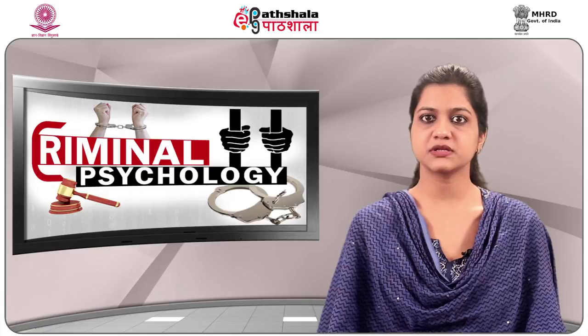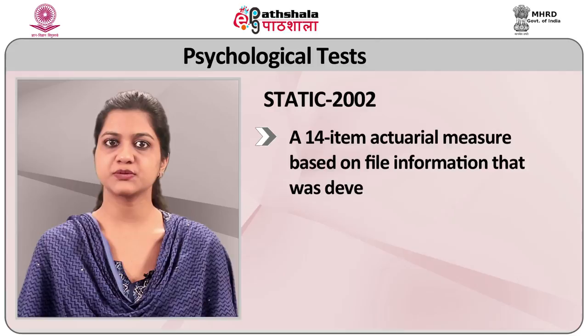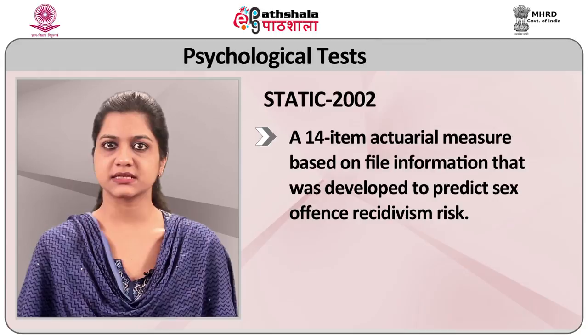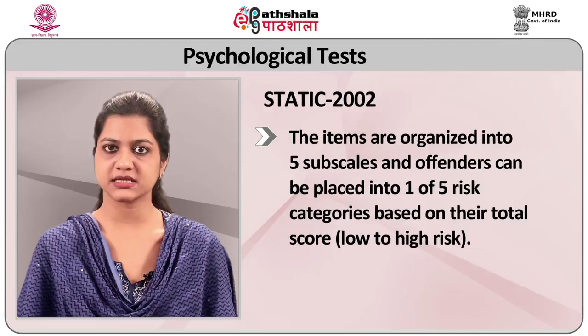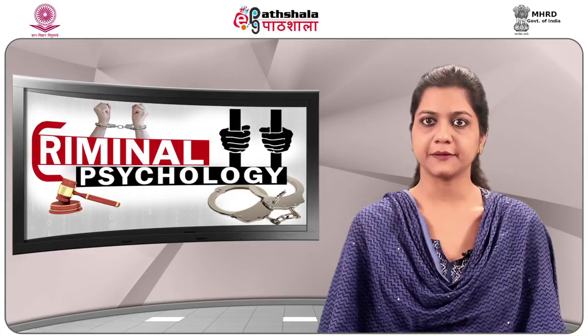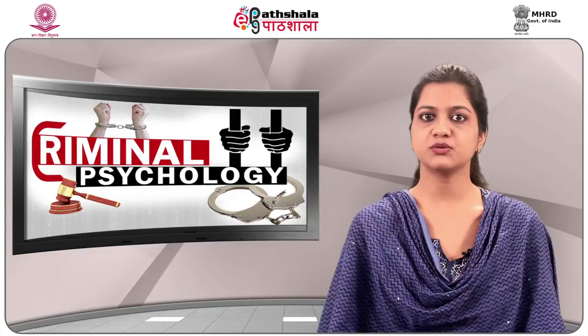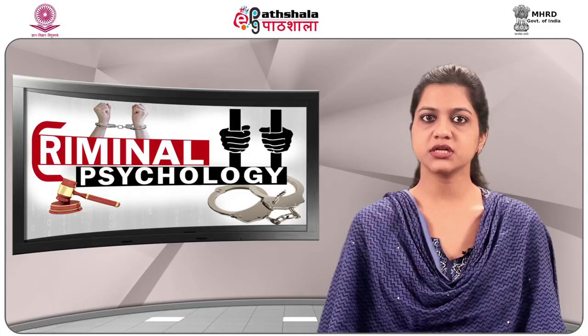STATIC-2002 is a 14-item measure based on file information that was developed to predict sex offence and rape risk. The items are organized into 5 sub-scales and offenders can be placed into 1 to 5 risk categories based on their total score (low to high risk). Research indicates that it is more accurate than STATIC-99 and evidences moderate ability to rank-order the risk for sexual, violent and general recidivism for contact offenders only.